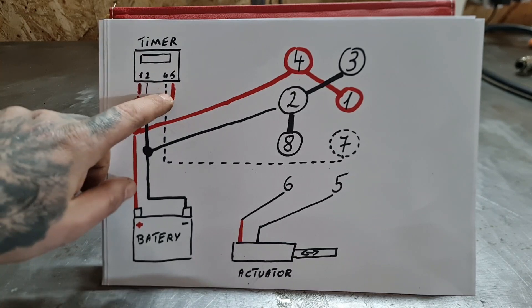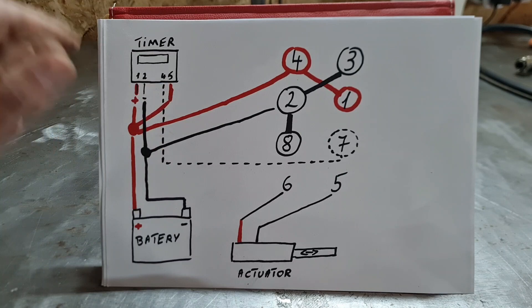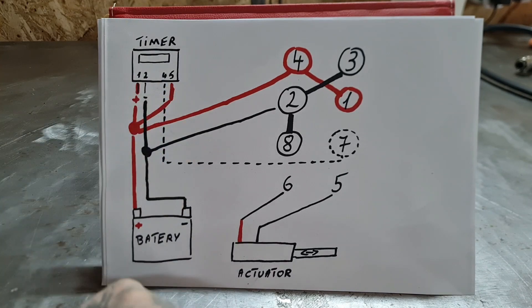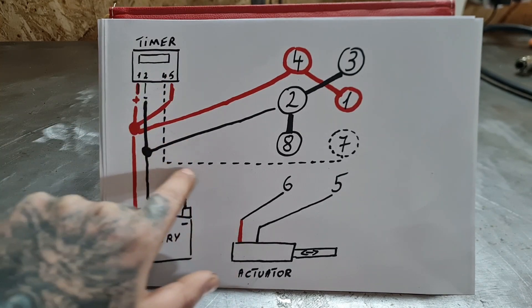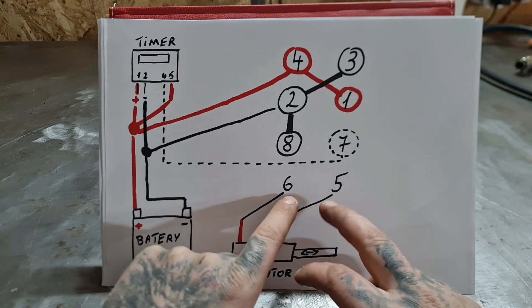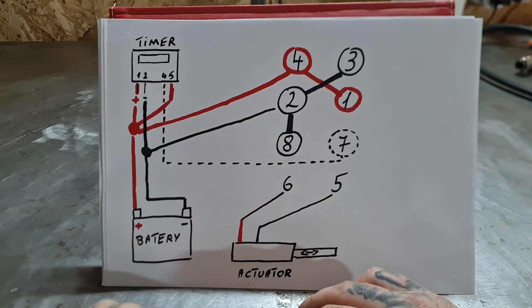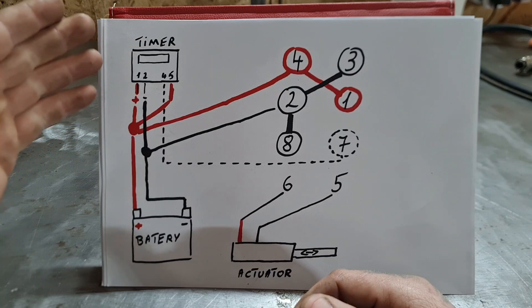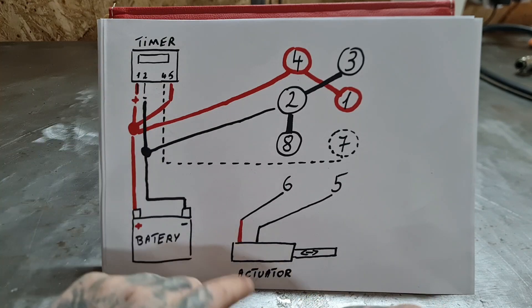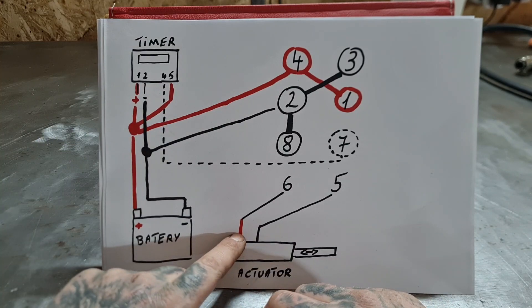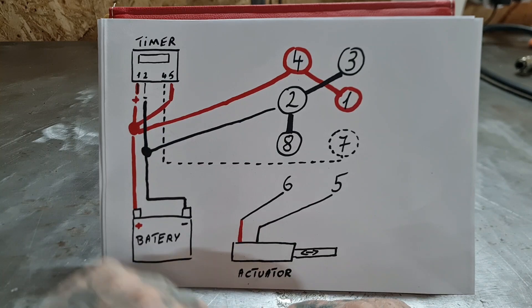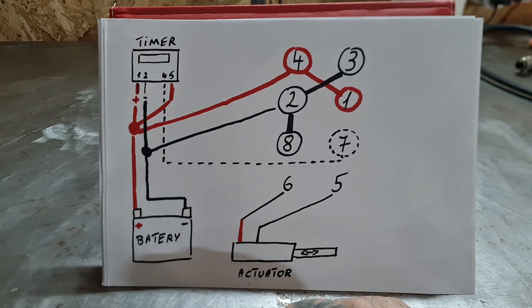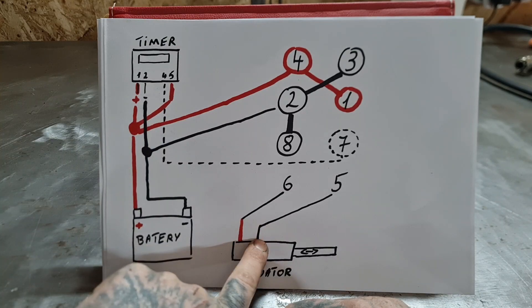For example, you set it to open at eight o'clock. This switch is going to be closed. When closed it sends a signal to seven and then the polarity between five and six switches. If before the timer is set the polarity is this is plus and this is minus, after the timer reaches eight o'clock this becomes plus and this minus, and then the actuator closes up.